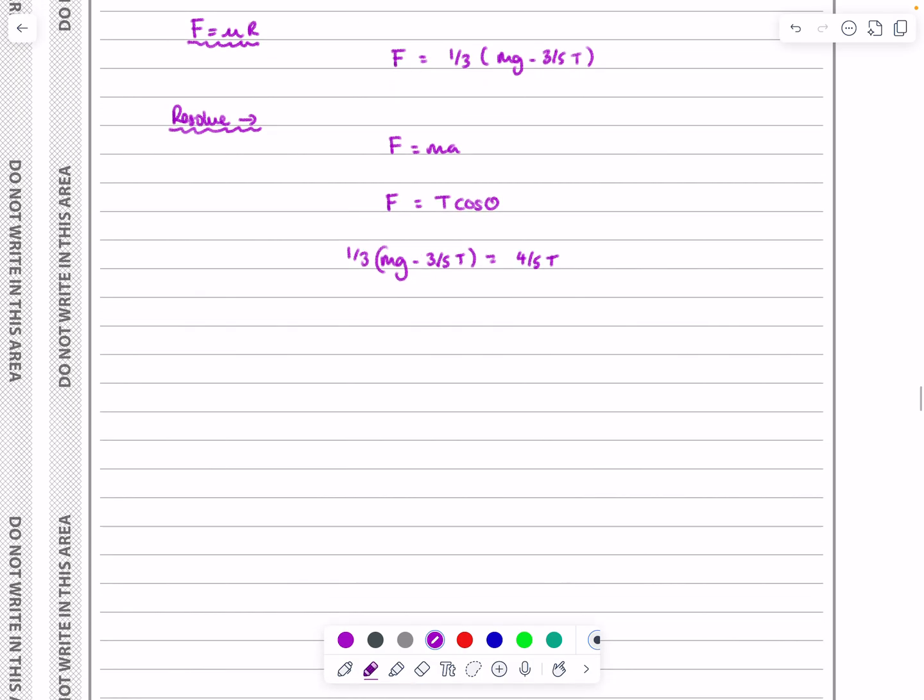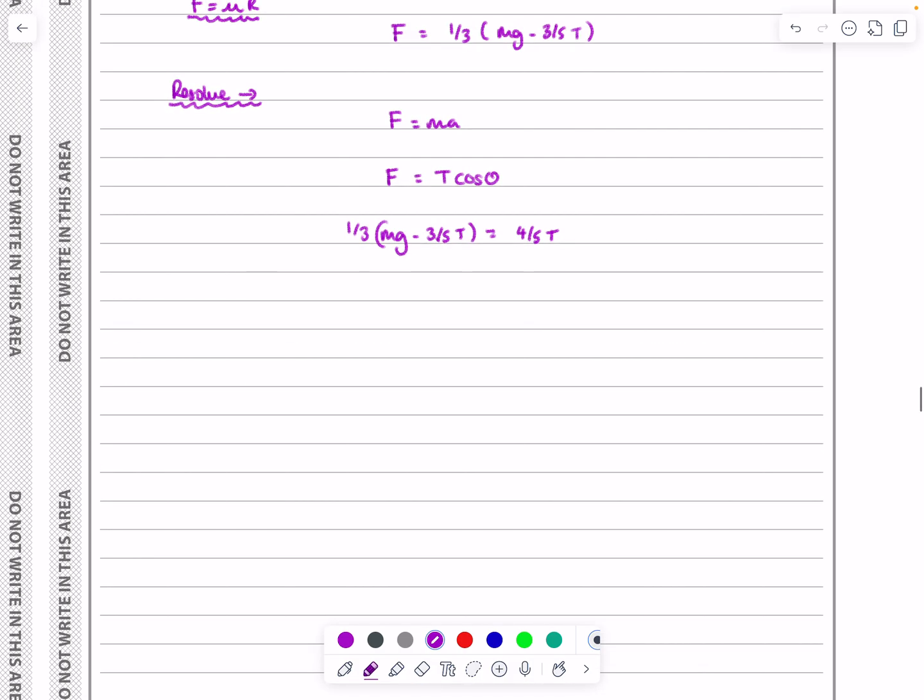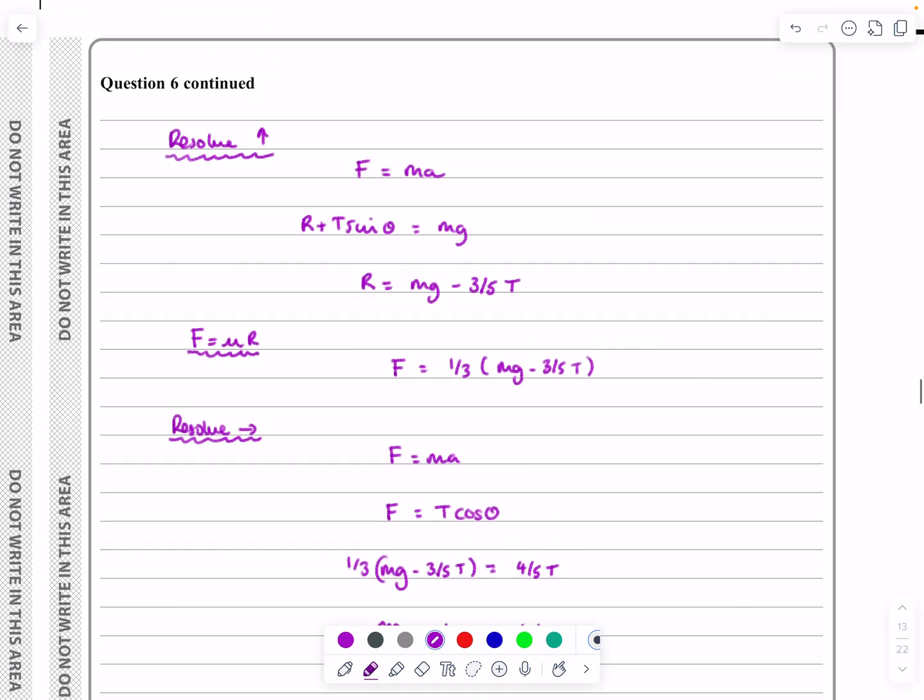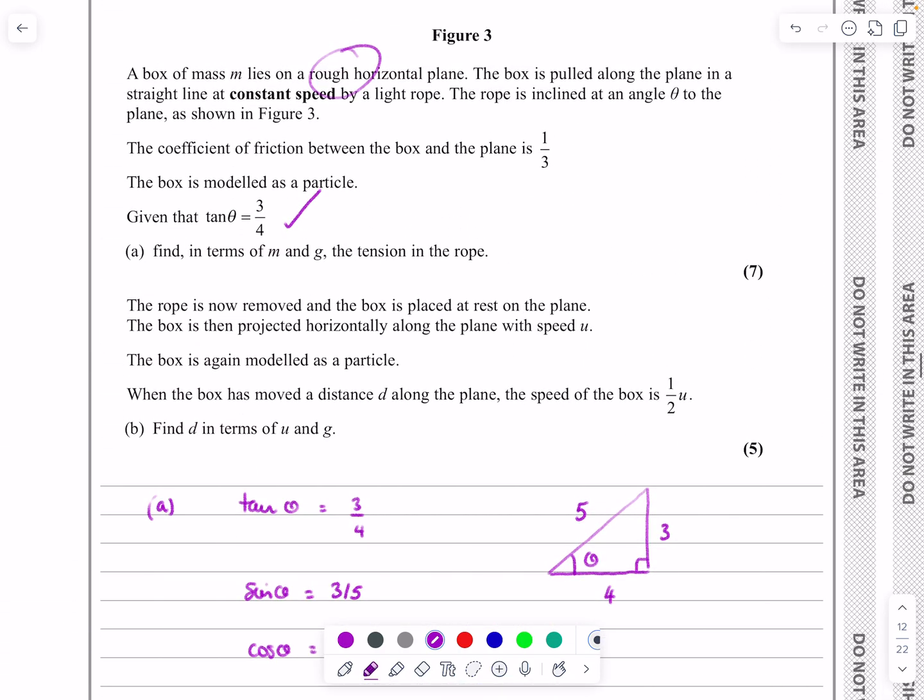That's equal to T cos theta, which is four-fifths T. So all I now need to do is rearrange this to get T equals. This is mg over three. One-third of three-fifths is one-fifth, so minus one-fifth T equals four-fifths T. Take the T's over to one side and we get T equals mg over three. The question asked to find the tension in terms of mg, so that part done.